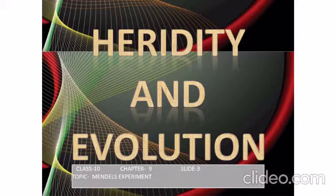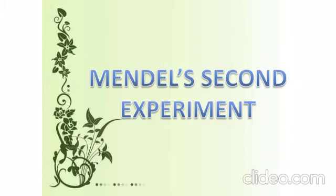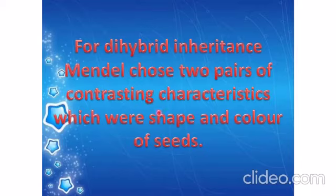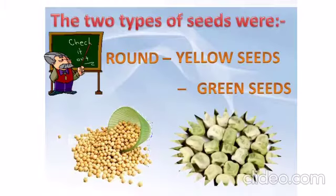Each pea plant produced many seeds in one generation, so the garden pea plant could easily be raised, maintained, and handled. Now continuing further to Mendel's second experiment — in this second experiment, he took dihybrid inheritance. Mendel chose two pairs of contrasting characters: two characteristics, which were the shape and color of the seed.